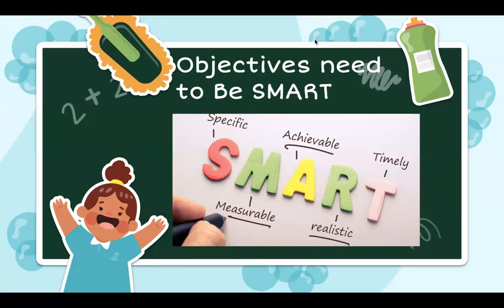Secondly, objectives should be mathematically Measurable. For example, profit increase by how much — twenty percent, thirty percent, two million, four million? Market share increase — forty percent, thirty percent? Whatever the goal, it must be expressed in mathematical terms to be called a SMART objective.